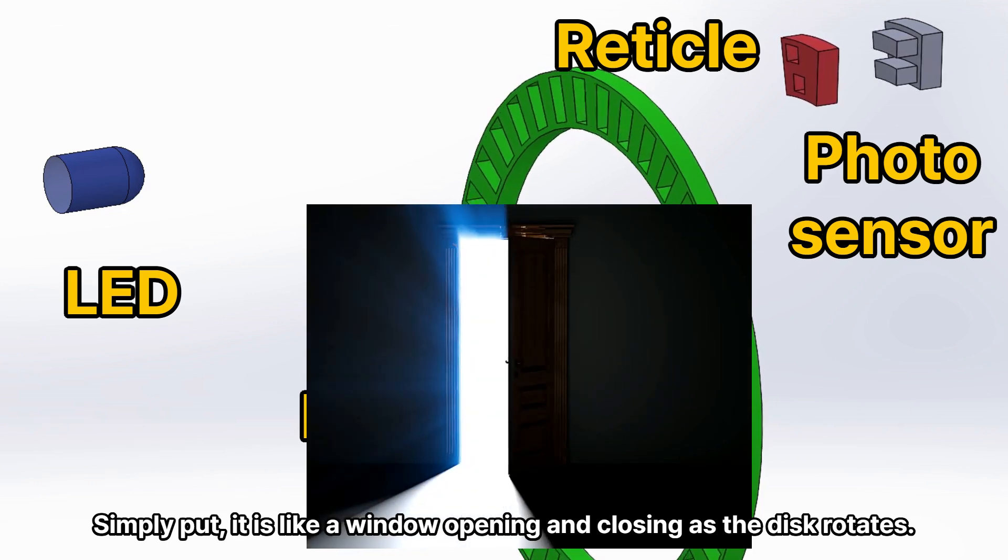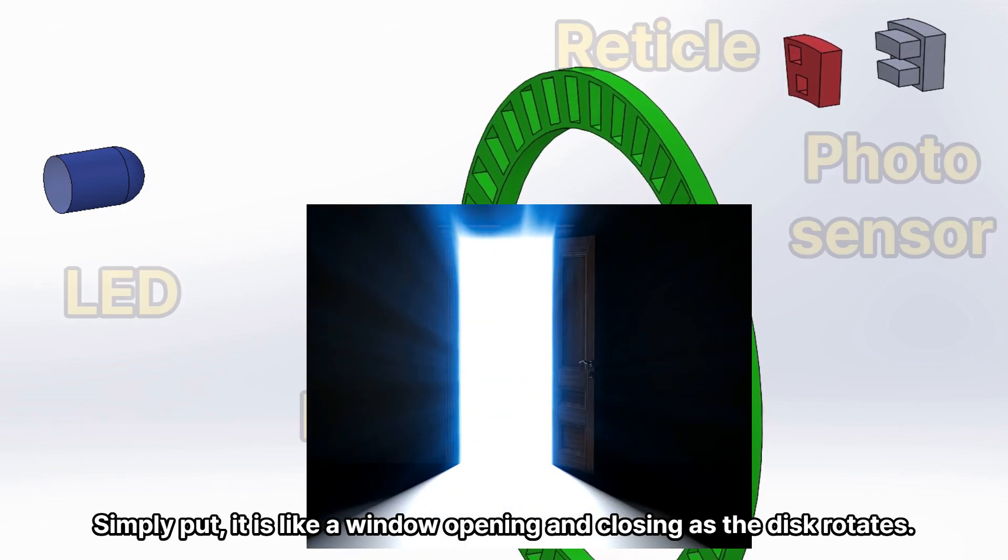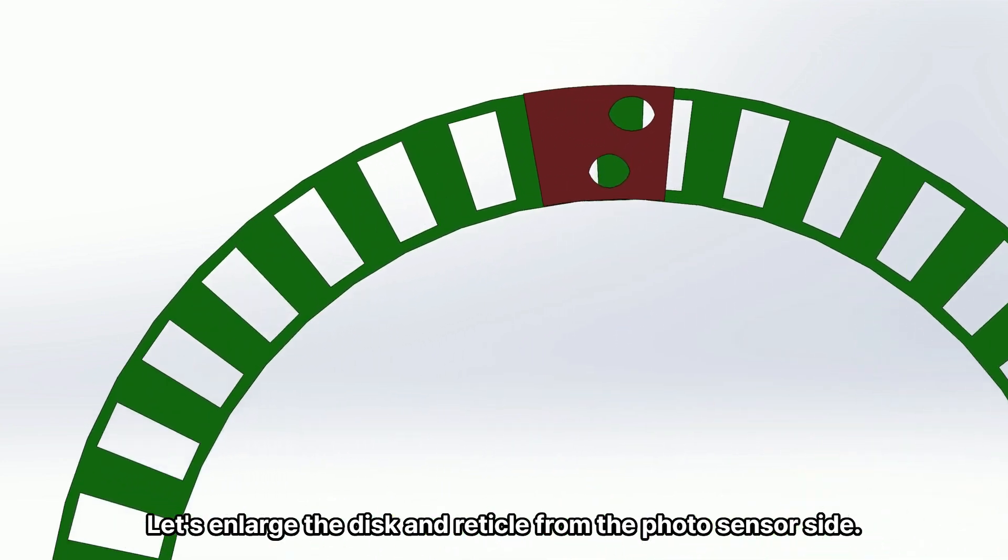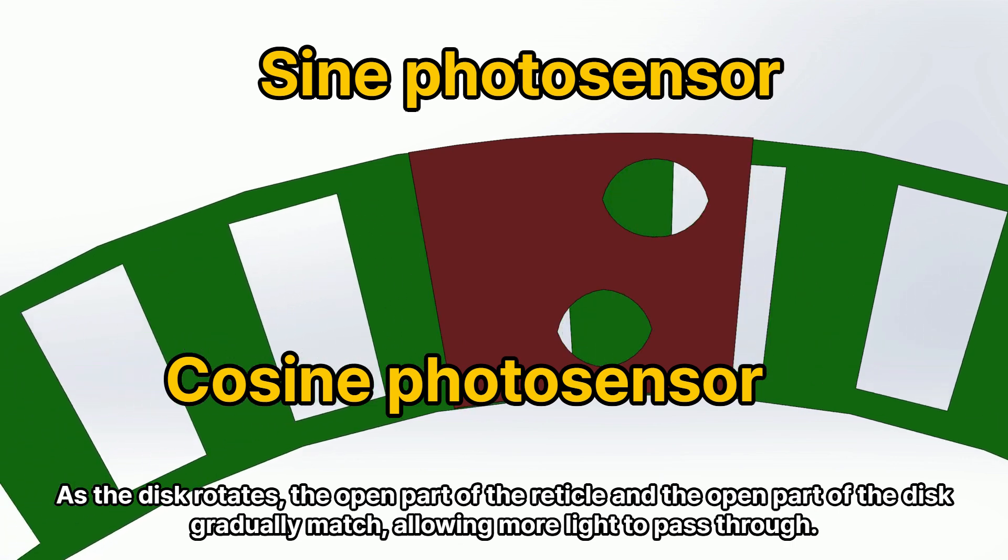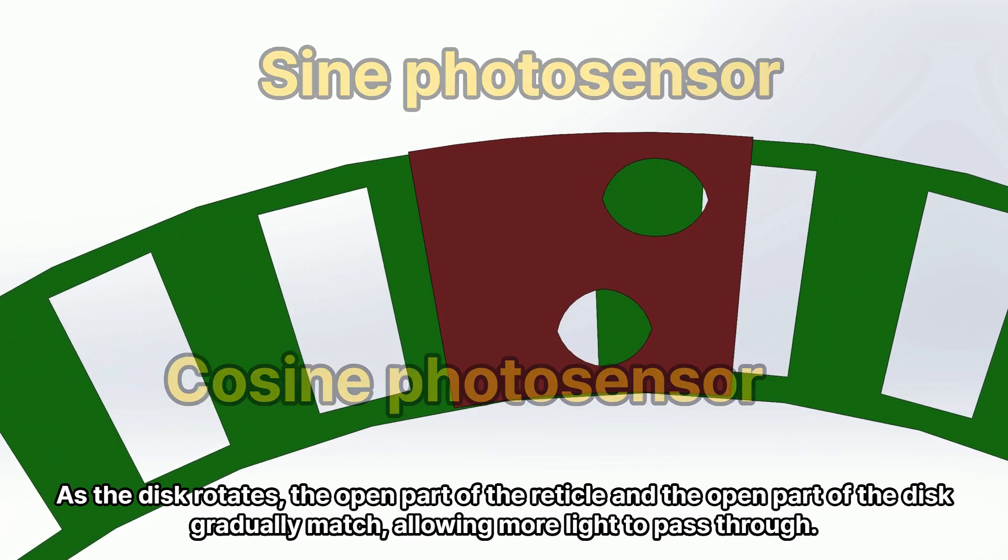The reticle is used to determine the sensing area of the photosensor according to the shape of the disk. Simply put, it is like a window opening and closing as the disk rotates. Let's enlarge the disk and reticle from the photosensor side. As the disk rotates, the open part of the reticle and the open part of the disk gradually match, allowing more light to pass through.